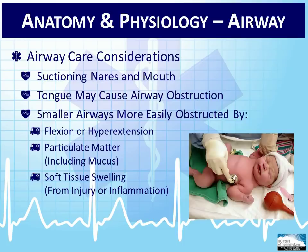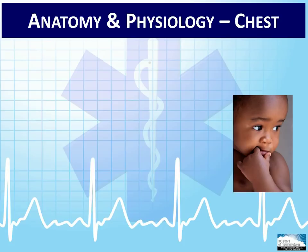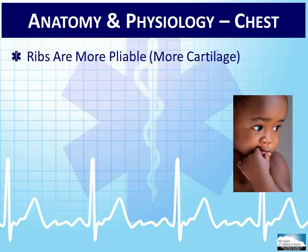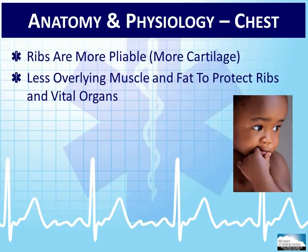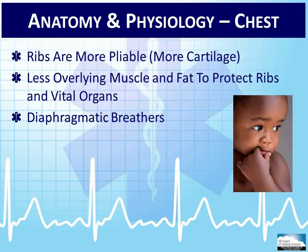When assessing the chest of a pediatric patient, important anatomy and physiology considerations include the pliability of the ribs given more cartilage in the ribcage compared to an adult, less overlying muscle and fat to protect the ribcage and vital organs, and ribs that move in more of a horizontal fashion primarily due to weaker intercostal muscles. As a result, small children are predominantly diaphragmatic breathers — they rely on the diaphragm more than the chest wall muscles to breathe. There are also fewer alveoli present in the lungs during the first year of life, and the chest wall of the pediatric patient is thinner than the adult, which makes it easier for an EMT to listen to lung sounds and hear heart tones.